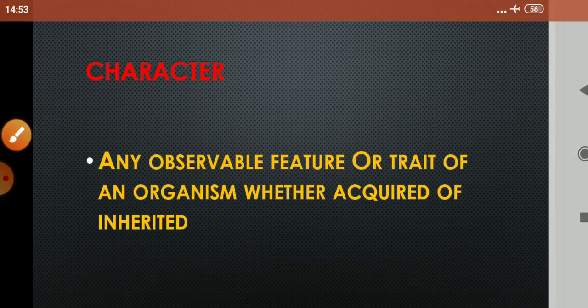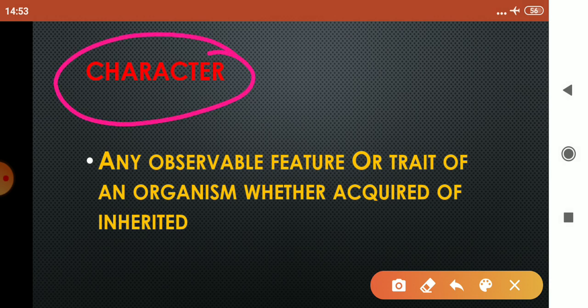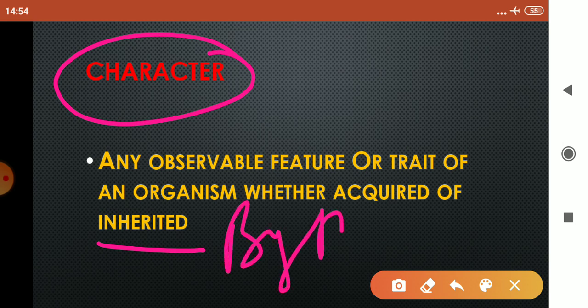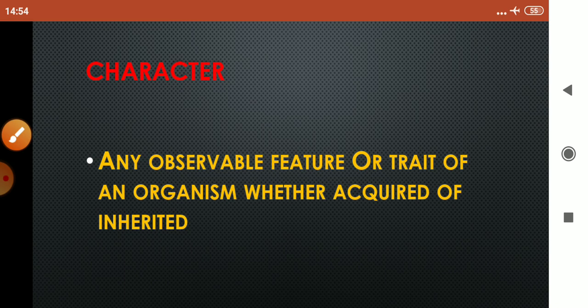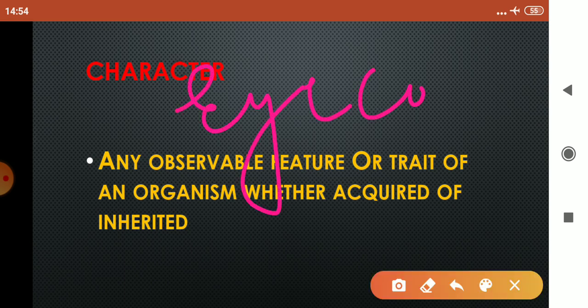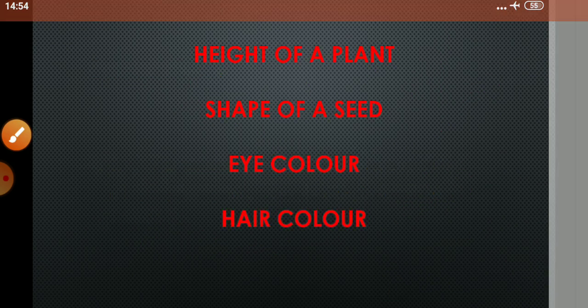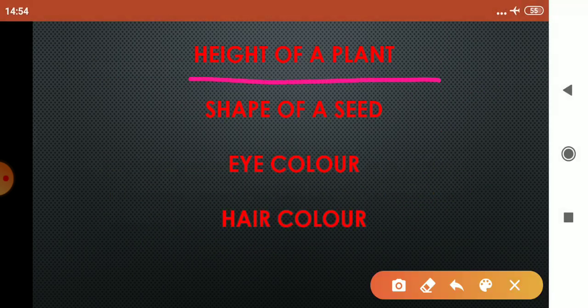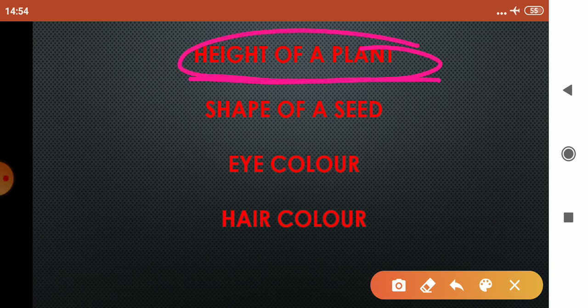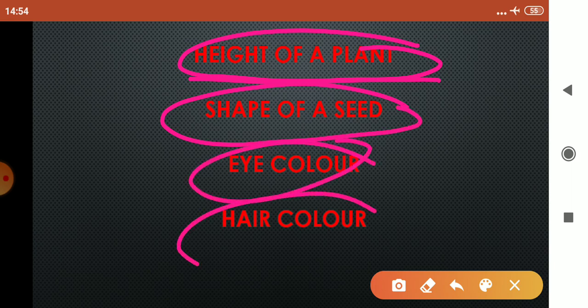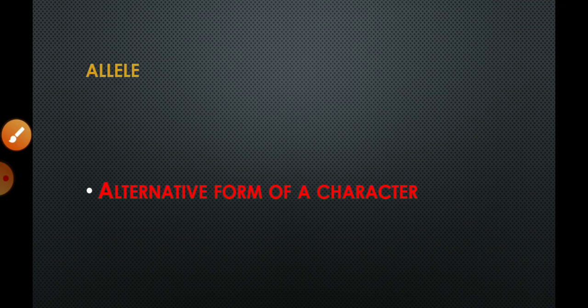So, this was about genome. Ab baat karte hain next term ki the next term is a character. Character agar generally bhi hum is term ke bare mein discuss karein to aapko malum hoga koi bhi observable feature jo aap dekh sakte hoon person ke andar jo usne acquire kiya ho yani ki apne lifetime mein uske andar aaya ho ya phir usne inherit kiya ho yani ki by birth use mila ho to wo hota hai hamara character like example ke liye main kah sakte hoon eye color. Eye color ek character hai ki kisi person ki eye black ho sakti hai brown ho sakti hai ya phir main kahoon hair color kisi ke hair ka color ye ek character hai agar hum plants ke bare mein baat karein to hum kah sakte hain plant ki height is a character plant can be tall, can be dwarf but height of the plant will be called as a character similarly shape of a seed is a character eye color and hair color these all are characters.